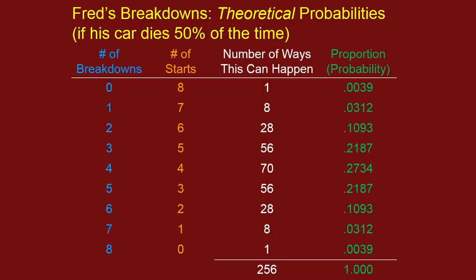So the theoretical probabilities are this probability table, this binomial distribution that we saw in the previous example, 256 possibilities. It's just exactly like tossing a coin eight times. If starting his car is like tossing a coin, well, then we can use coin tossing to model what's going on here. This is a model of one possibility here, or one set of possibilities.